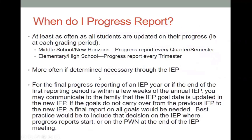When do we progress report as a district? At least as often as all students are updated on their progress — so each grading period. At the middle school and New Horizons, that progress is every quarter, which equates to four times a year. At the elementary and high school level, including Delta, they progress report every trimester, which is three times a year. The IEP team can increase the frequency if they determine it is necessary.